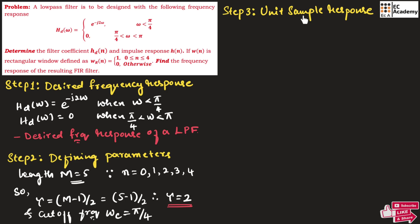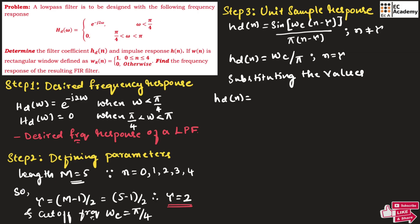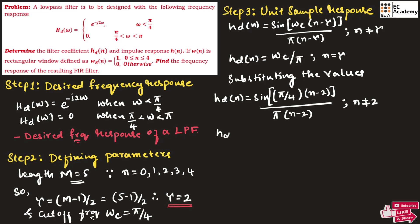Step 3 is to define the unit sample response. The unit sample response hd of n is given as: sin(omega_c times (n minus tau)) divided by pi times (n minus tau), for n not equal to tau; and hd of n equals omega_c divided by pi for n equal to tau. Substituting the values, hd of n equals sin(pi/4 times (n minus 2)) divided by pi times (n minus 2) for n not equal to 2, and hd of 2 equals pi by 4 divided by pi, which equals 1 by 4, equal to 0.25.